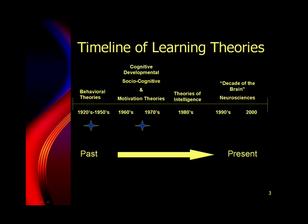If we look at this timeline of learning theories, you'll see that the neurosciences began emerging in the 1990s and over the last 20 years have begun to inform our practice as educators. But now we're taking a step back to the beginning of theories of learning, starting with the behavioral theories that emerged during the 1920s to 50s, and then moving into the cognitive developmental theories that emerged from the 60s all the way up until the 80s.